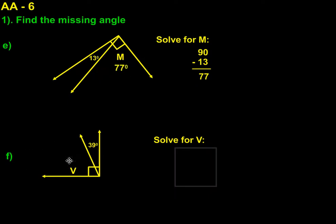Same thing for letter F. I'm trying to solve for V. I have a right angle. I have 39 degrees for the smaller amount. If I take 39 and subtract it from 90, I get 51. That indicates that the missing amount is 51 degrees.